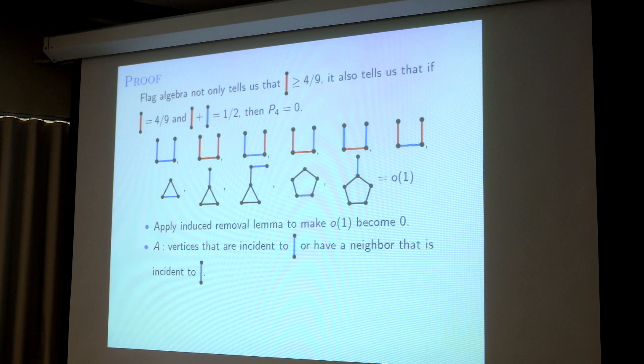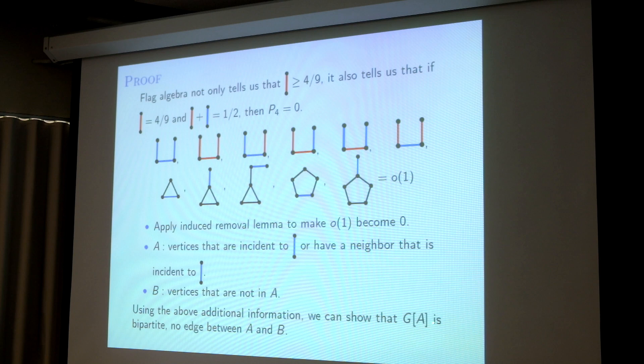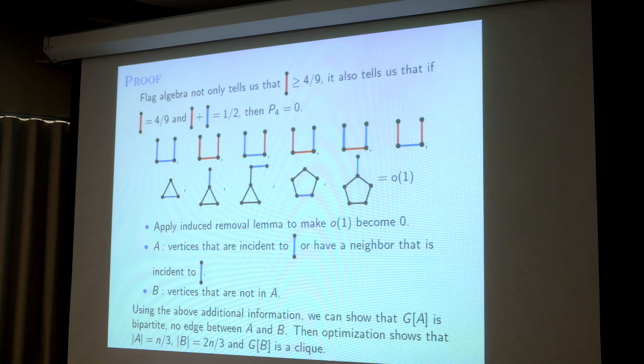How we partition the vertices is like this: A is the vertices that are incident to a blue edge or have a neighbor incident to a blue edge, and B is the other vertices. Then you use this information to say this partition is the right partition. We show that G restricted to A is bipartite, and there are no edges between A and B. We also show that neither A nor B is empty. Then we use optimization to show the right sizes for A and B give you a clique.